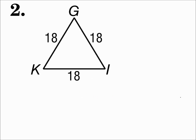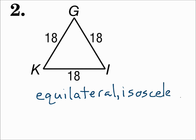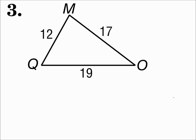Number two, all sides are the same length, so it's equilateral. And remember, equilateral triangles are also isosceles, because at least two sides are congruent. Number three, all sides are different, so it's a scalene triangle.